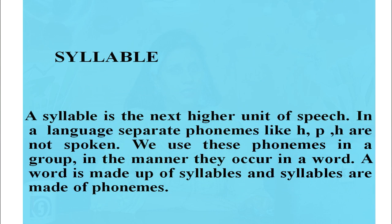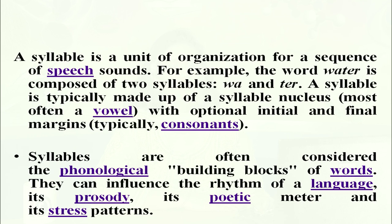Let's talk about syllable. A syllable is the next higher unit of speech. In a language, separate phonemes like H and P are not spoken alone; we use these phonemes in a group, in the manner they occur in a word. A word is made up of syllables and syllables are made of phonemes. A syllable is a unit of organization for a sequence of speech sounds. For example, the word 'water' is composed of two syllables: 'wa' and 'ter'. Syllables are often considered the phonological building blocks of words. They can influence the rhythm of a language, its prosody, its poetic meter and its stress patterns.